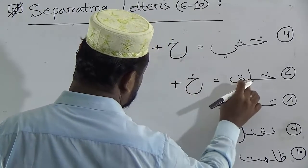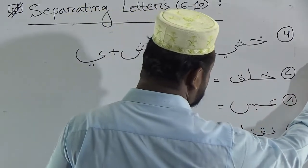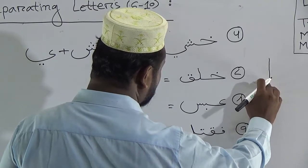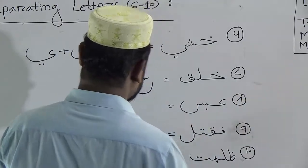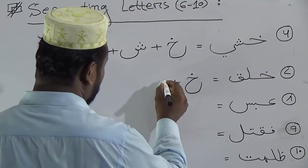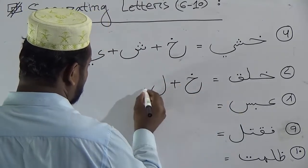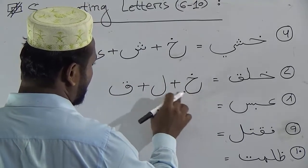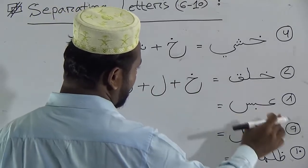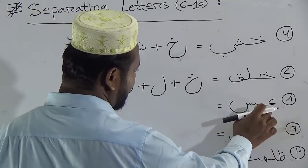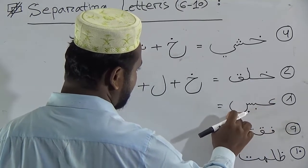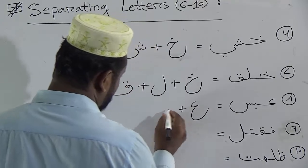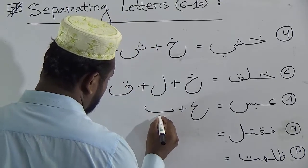This letter is 'lam.' We know that lam's total shape is like this, but when it comes with any other letters its shape will be like alif. So it is lam. The last letter is khashiyah, and the last letter is khashiyah. So it will be khashiyah plus bah, and the last letter is seen.